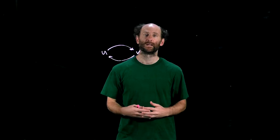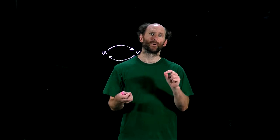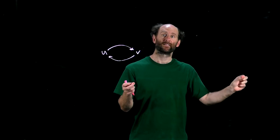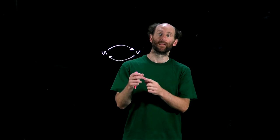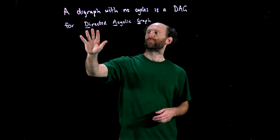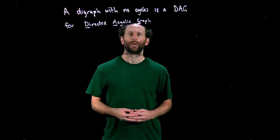More generally, any cycle in a digraph will prevent us from finding a topological sort. Recall that a cycle is a sequence of nodes connected by arcs where the only repeated nodes are the first and the last in that sequence. So it's like a path but it starts and finishes at the same place in the graph. A digraph with no cycles is known as a DAG, which stands for Directed Acyclic Graph, and we can prove the following result.